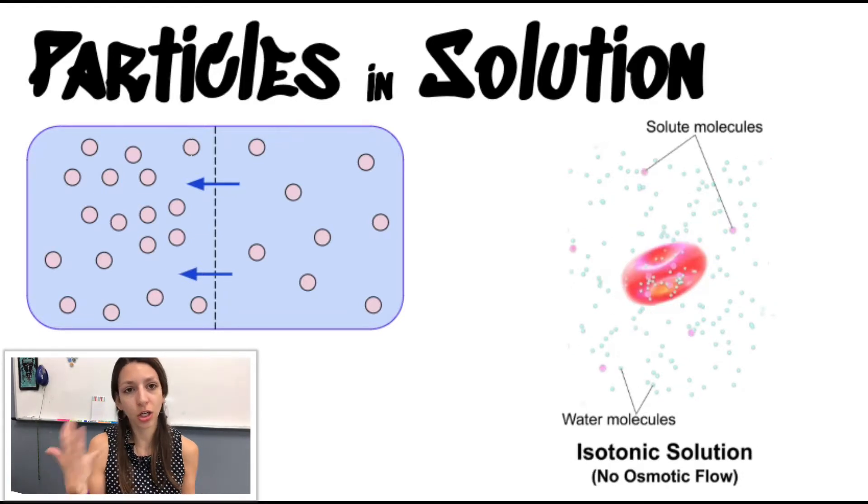Now for an isotonic solution, there's no net gain of water anywhere. It's just no osmotic flow. Of course, molecules are constantly in motion, but isotonic solutions have equal water potentials on either side. And so what we see is just sort of this equal environment the whole time.